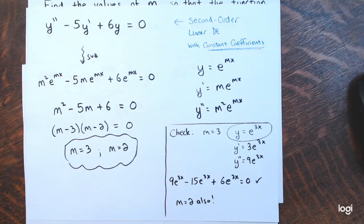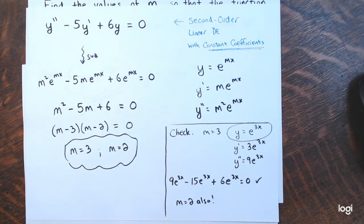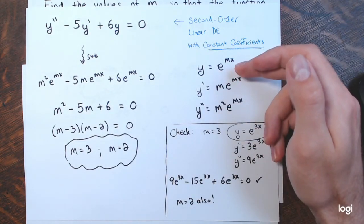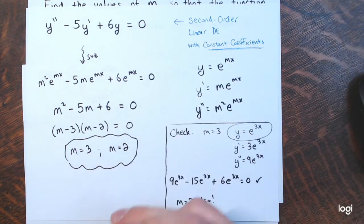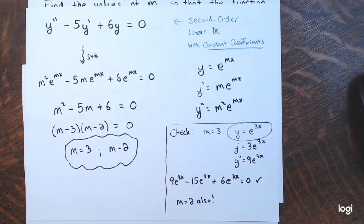If you're given an nth order linear differential equation with 0 on one side — homogeneous — and all constant coefficients that don't depend on the independent variable, make the substitution y equals e to the mx, find your auxiliary or characteristic equation, and solve for m. That gives you particular solutions to that differential equation, and from there we can go on to state the general solution in later videos.